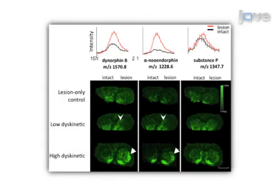The results show significant differences in relative opioid peptide levels in different areas of the brain between different treatment groups. The main advantage of this technique over existing methods like radioimmunoassay or gel-based approaches is that MALDI imaging allows for localization of treatment-induced changes while maintaining high molecular specificity.